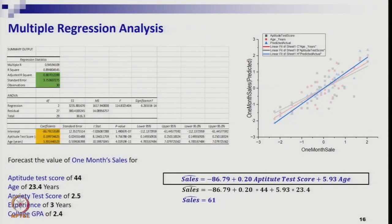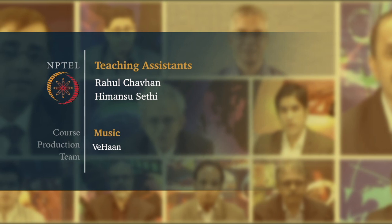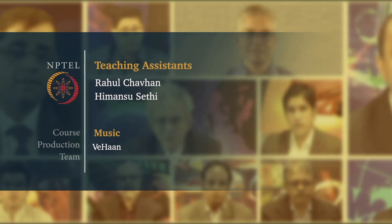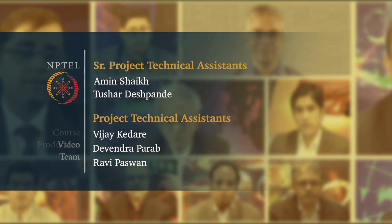Overall, this is the analysis of multiple regression. The final output uses only aptitude test score and age, and the corresponding forecast for a given dataset. This is what multiple regression is about.